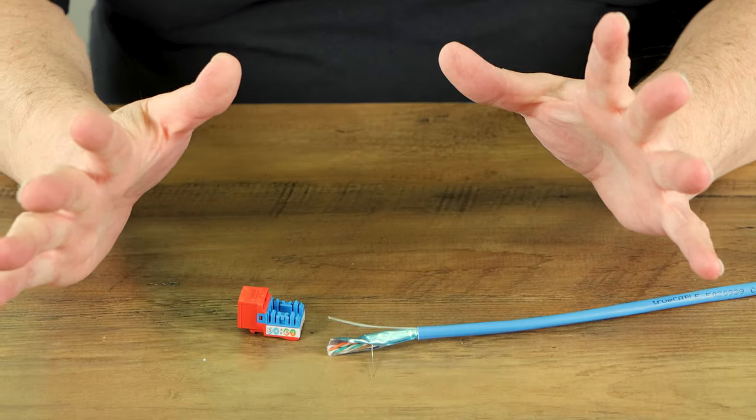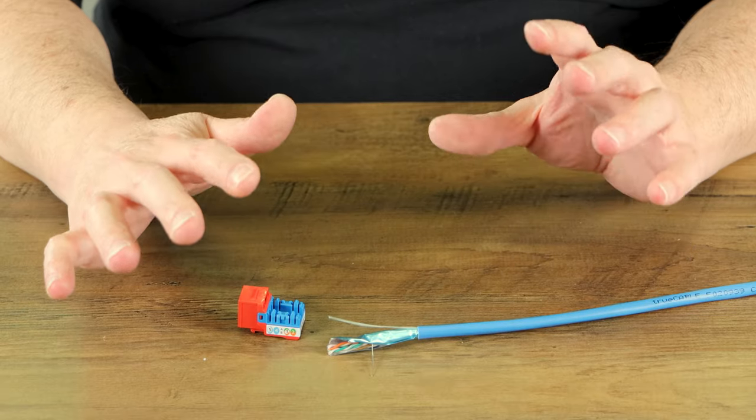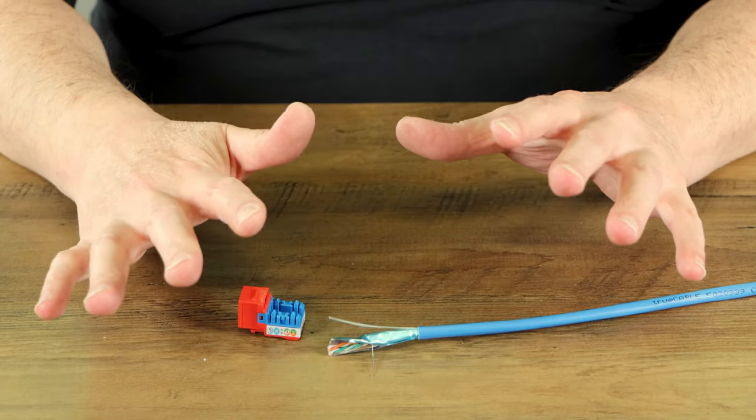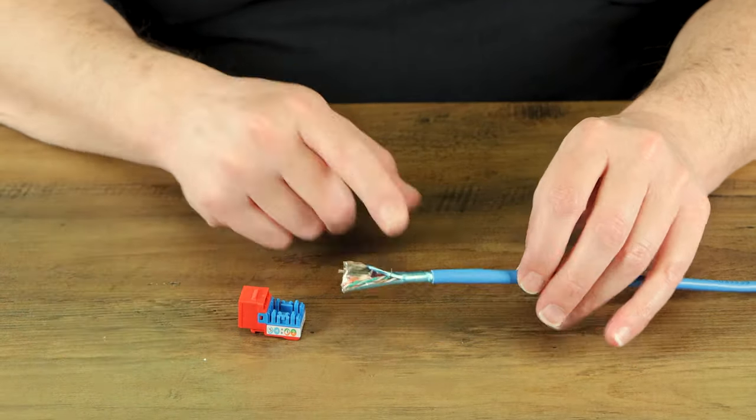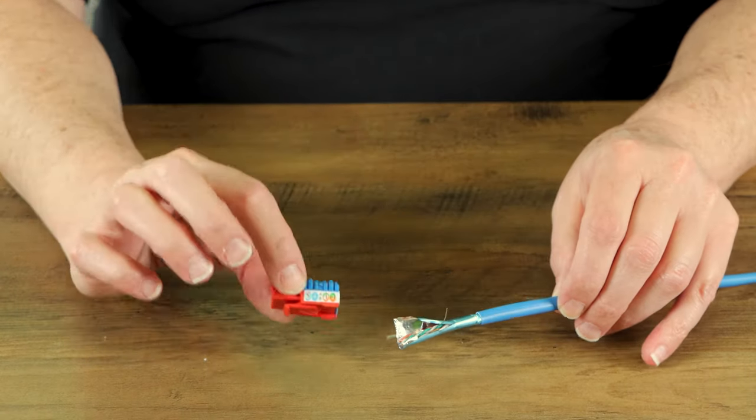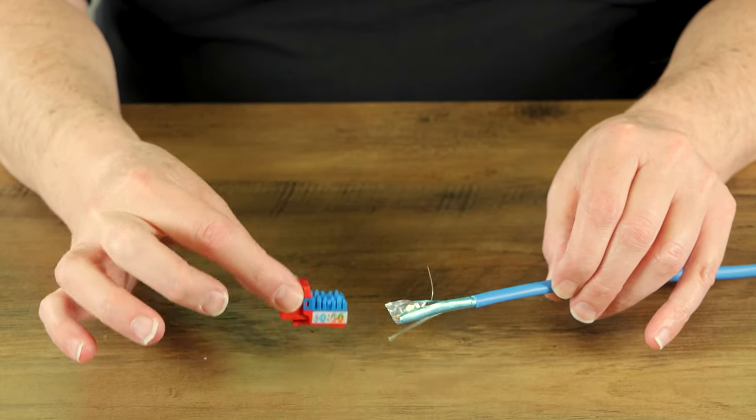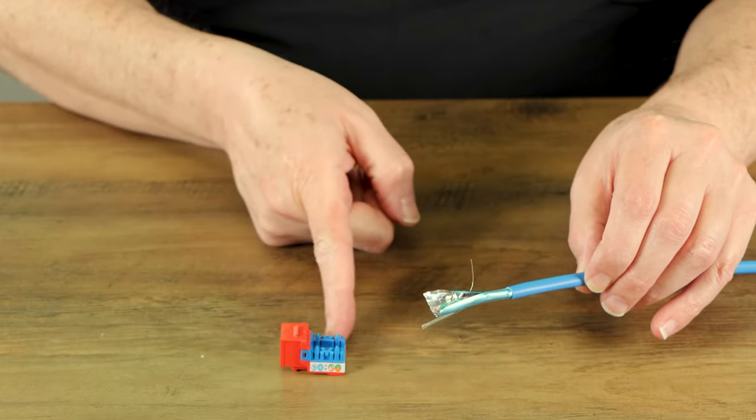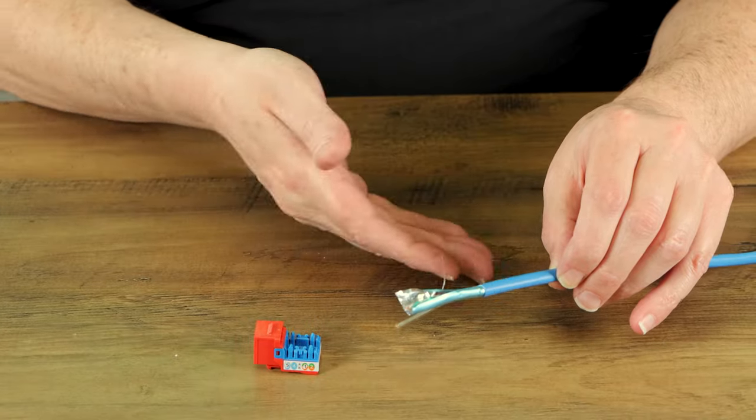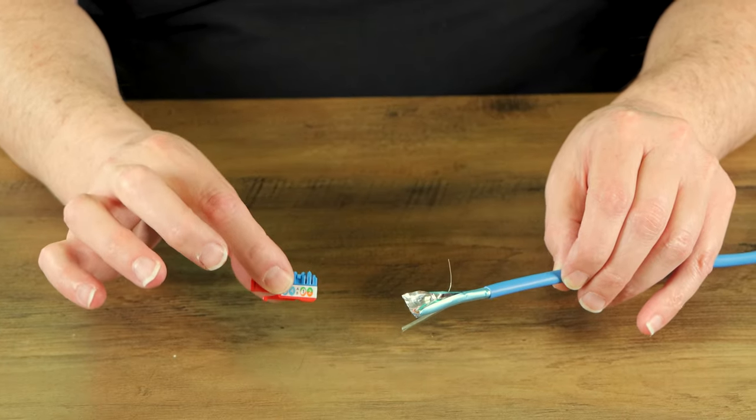So one of the biggest things in the ethernet world that falls into the do not do this category is using shielded ethernet cable with unshielded hardware. In this case, we have an unshielded keystone jack here, and normally you would punch your ethernet cable into this jack, but this one is designed for unshielded cable.